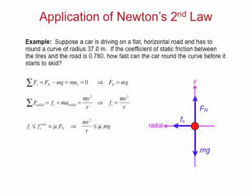The static friction force must be less than or equal to its maximum value of μ_s times the normal force. Therefore, we conclude that mv² over r, the static friction force, is less than or equal to μ_s times mg, the normal force. Solving this inequality for v gives v is less than or equal to the square root of μ_s times g times r.